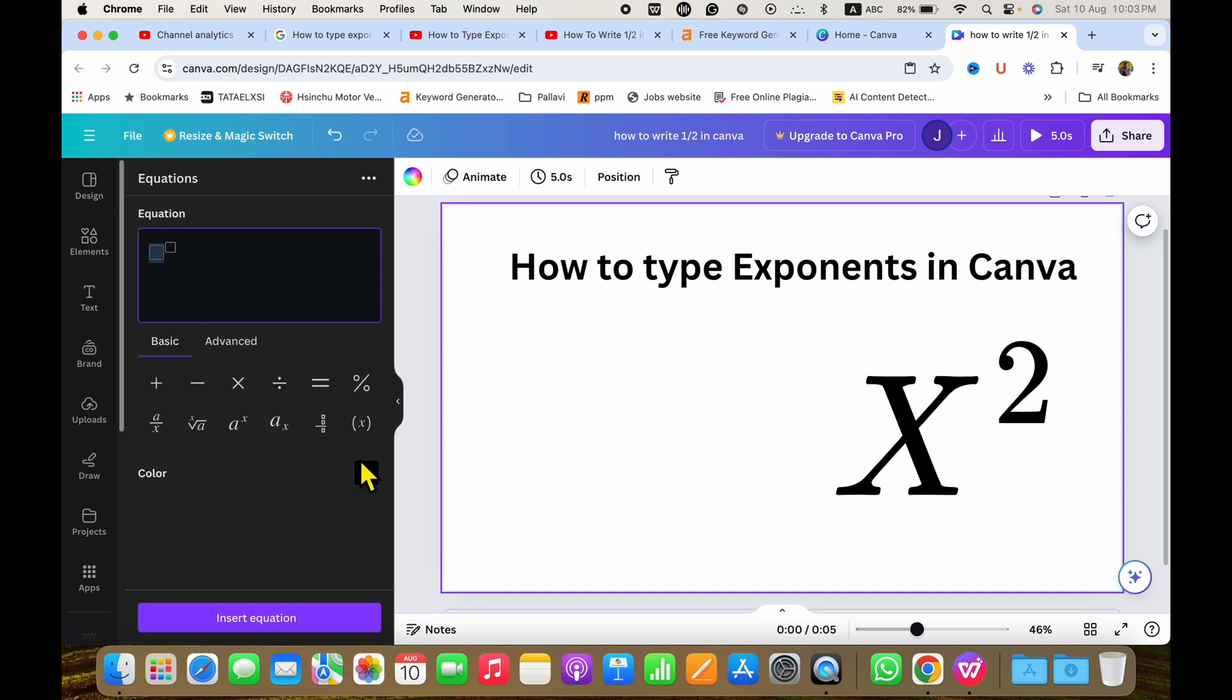Just type what you want in the boxes, for example, 2 raised to 2. And after you type, you need to click here on the insert equation.